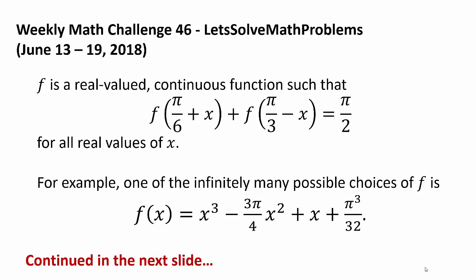For example, one of the infinitely many possible choices of f is f(x) = x³ - (3π/4)x² + x + π³/32.